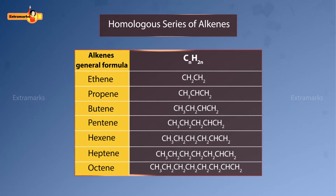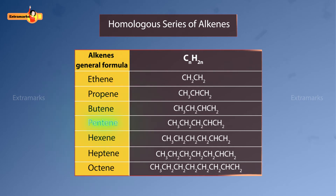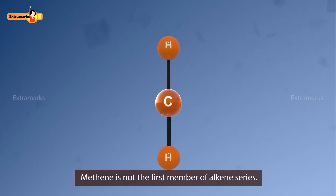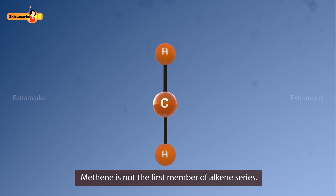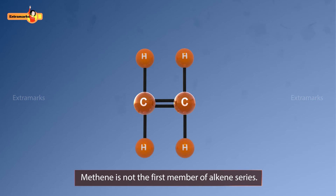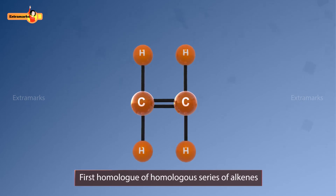Now let's take the homologous series of alkenes. Ethene is the first member of this series; propene, butene, pentene, hexene, heptene, and octene are some other members. Why is methane not the first member? Notice that all alkenes contain at least one carbon-carbon double bond. Since the presence of two carbon atoms is essential for the formation of a double bond, methane — a single-carbon compound — does not exist as an alkene.